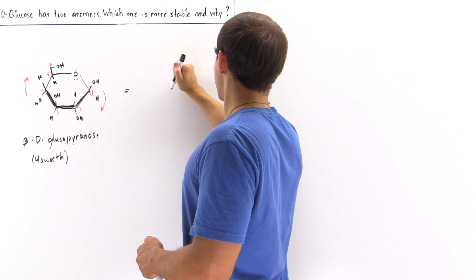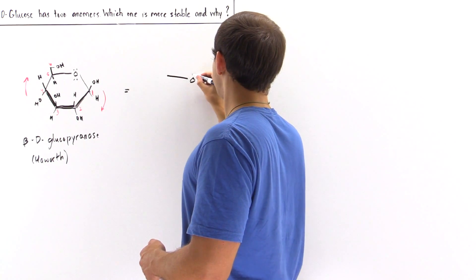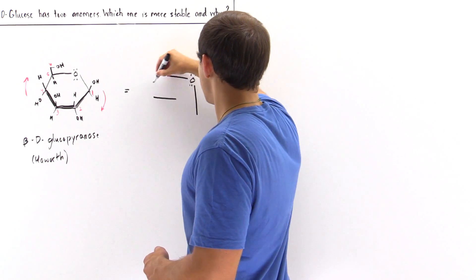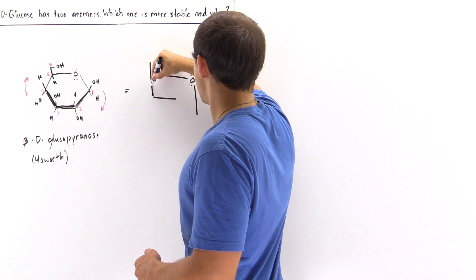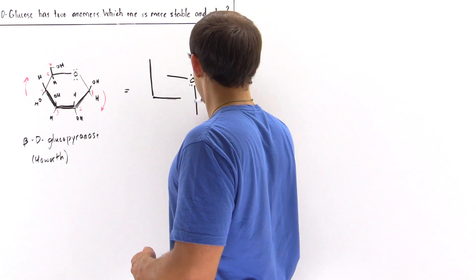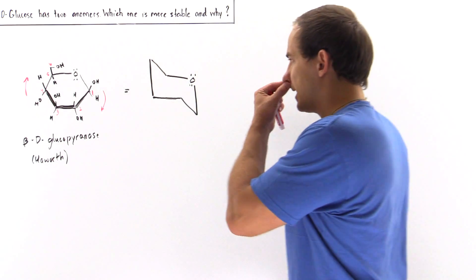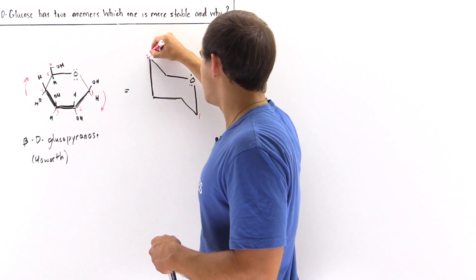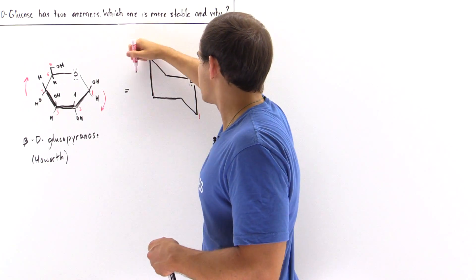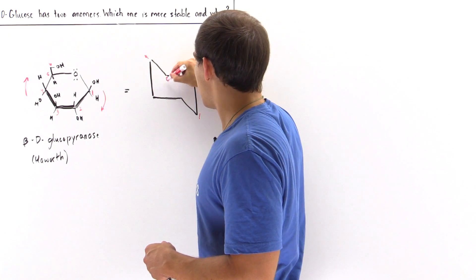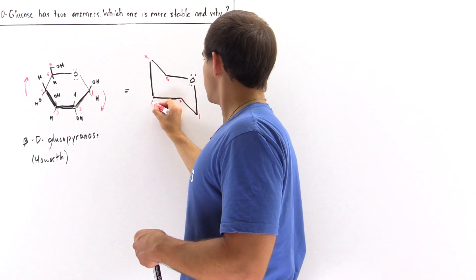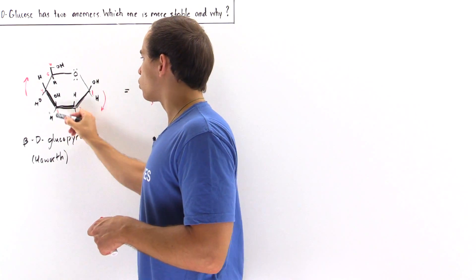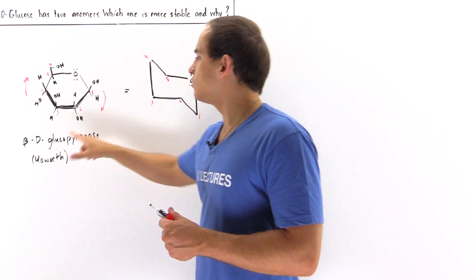Drawing the chair at a slight angle: one end goes downward, the other goes upward. This is our chair conformation. Carbon number one is pulled downward, carbon number four is pulled upward. Carbon five is here, carbon six is here, and carbons two and three are also labeled. We now want to draw the orientations of the hydroxyl groups on this chair conformation of beta-D-glucopyranose.